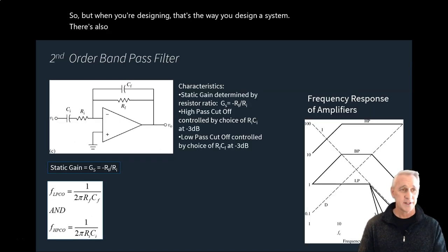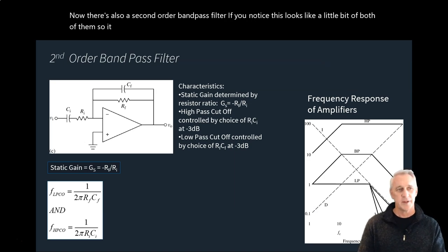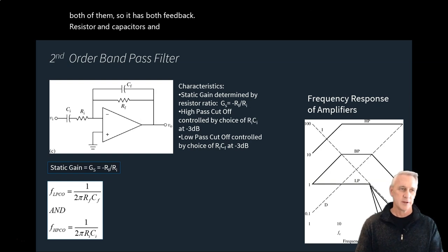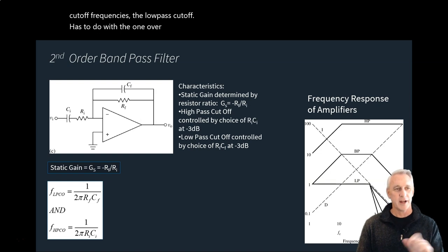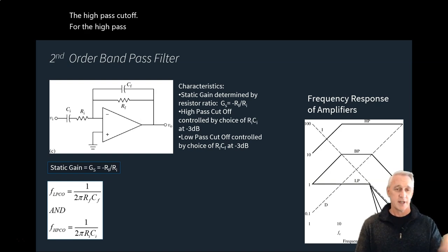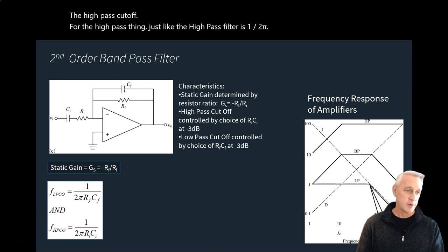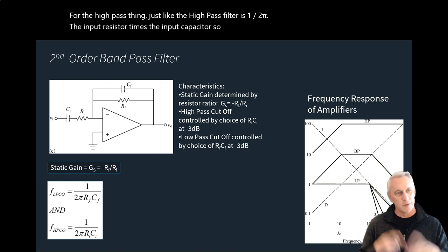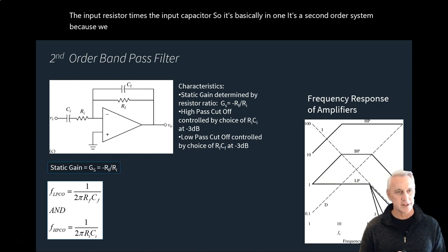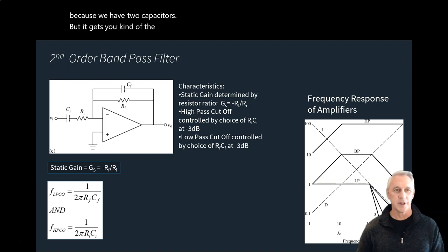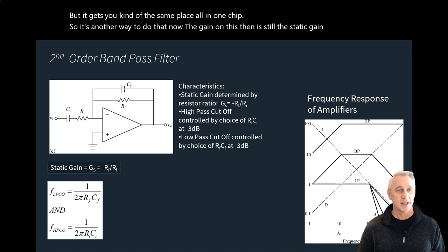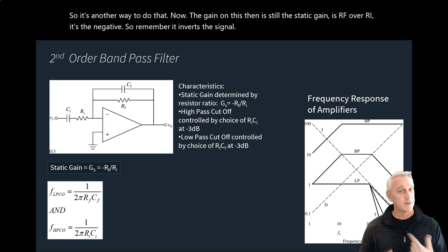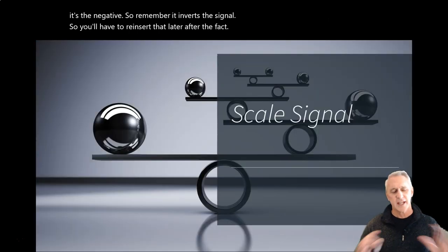A second-order bandpass filter combines both feedback and input resistors and capacitors, giving two cutoff frequencies. The low-pass cutoff is 1/(2π·RF·CF) and the high-pass cutoff is 1/(2π·RI·CI). It's a second-order system with two capacitors, but achieves both cutoffs in one chip. The static gain is still −RF/RI, which inverts the signal, requiring re-inversion afterward.